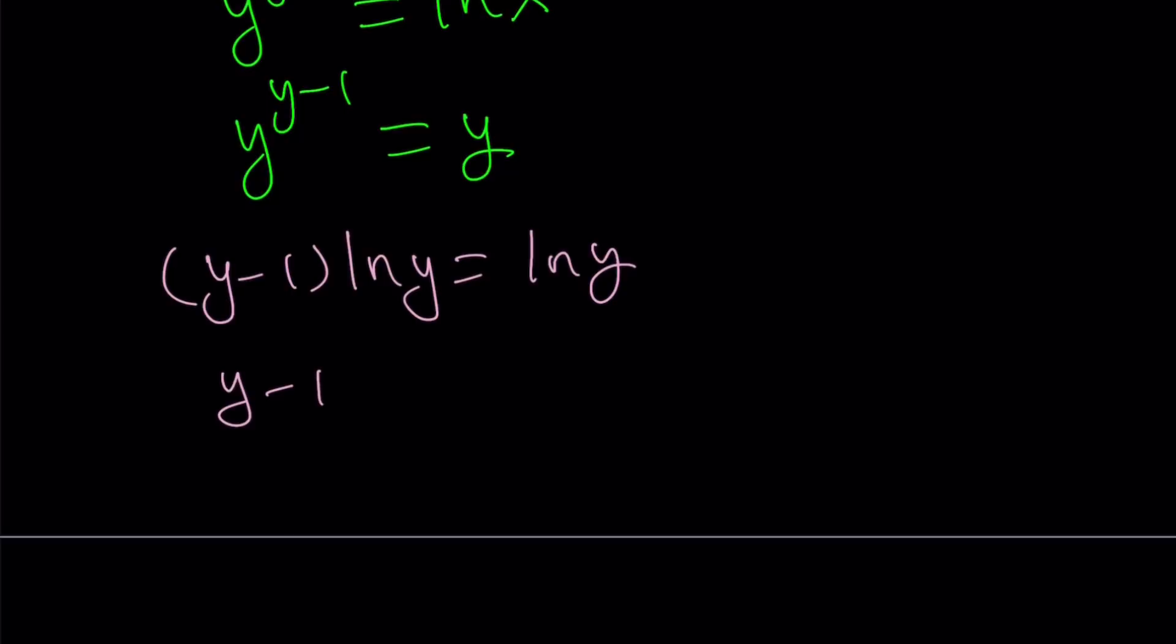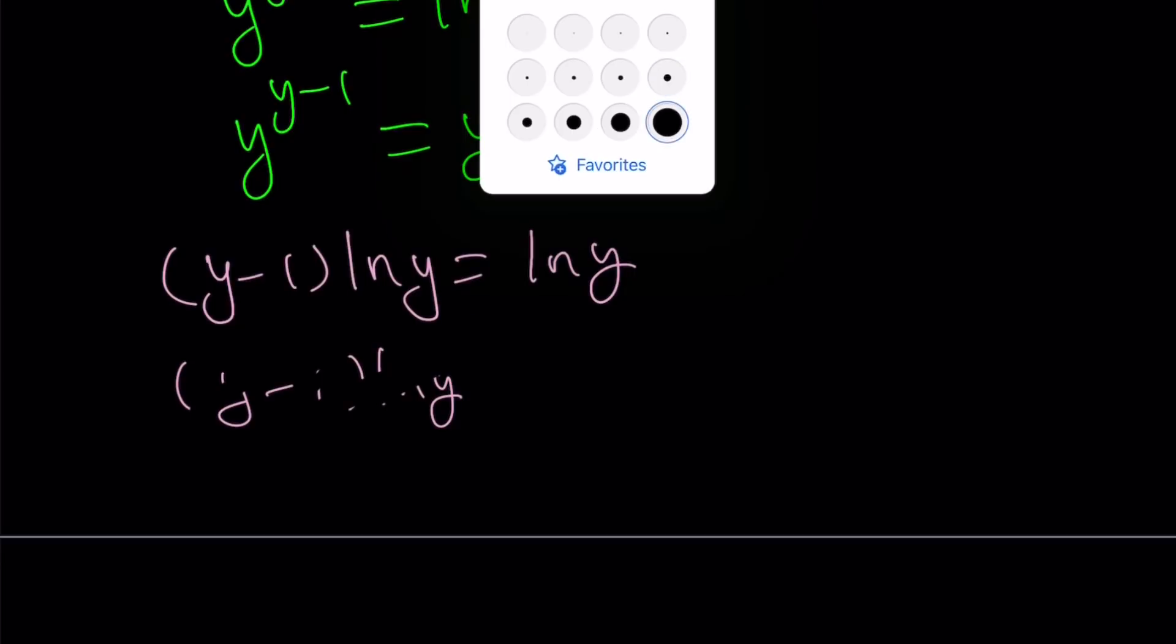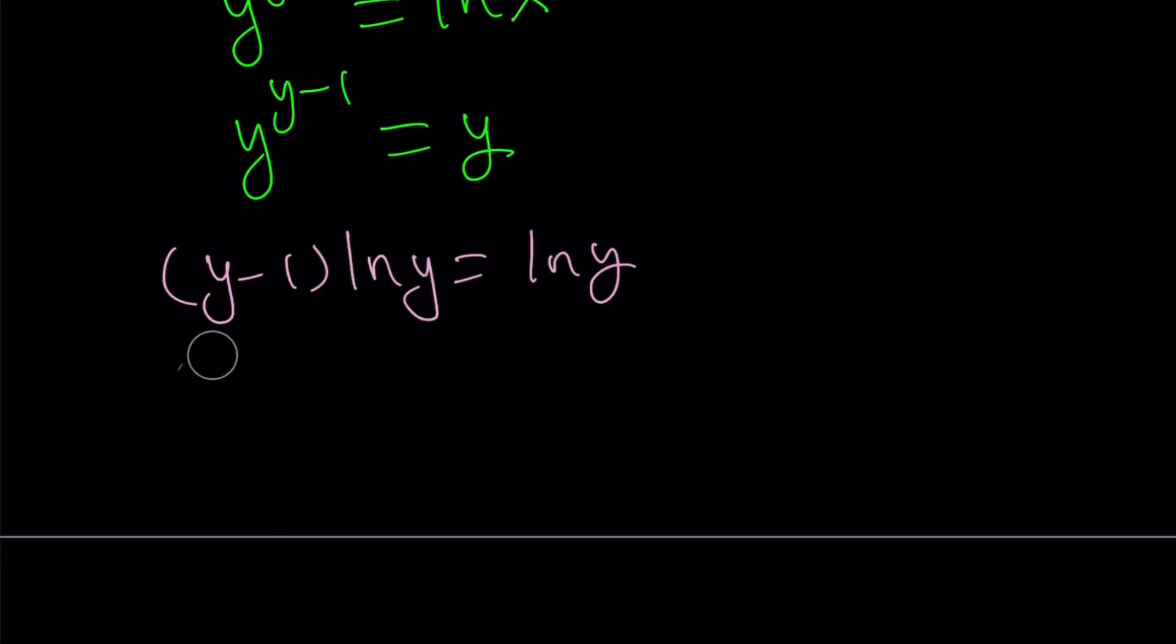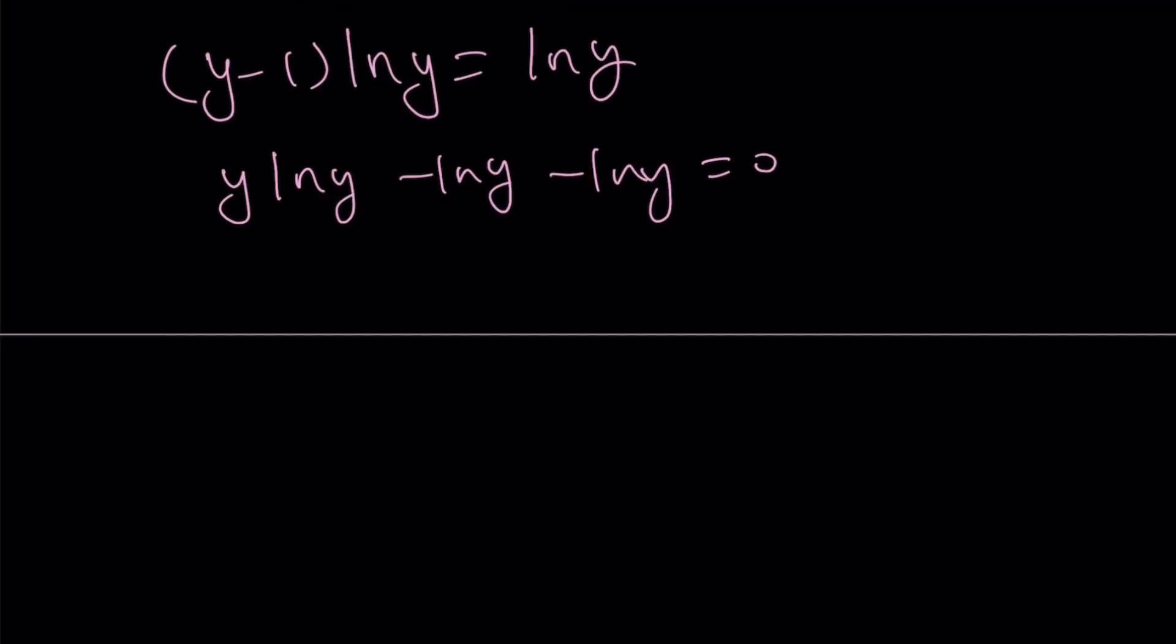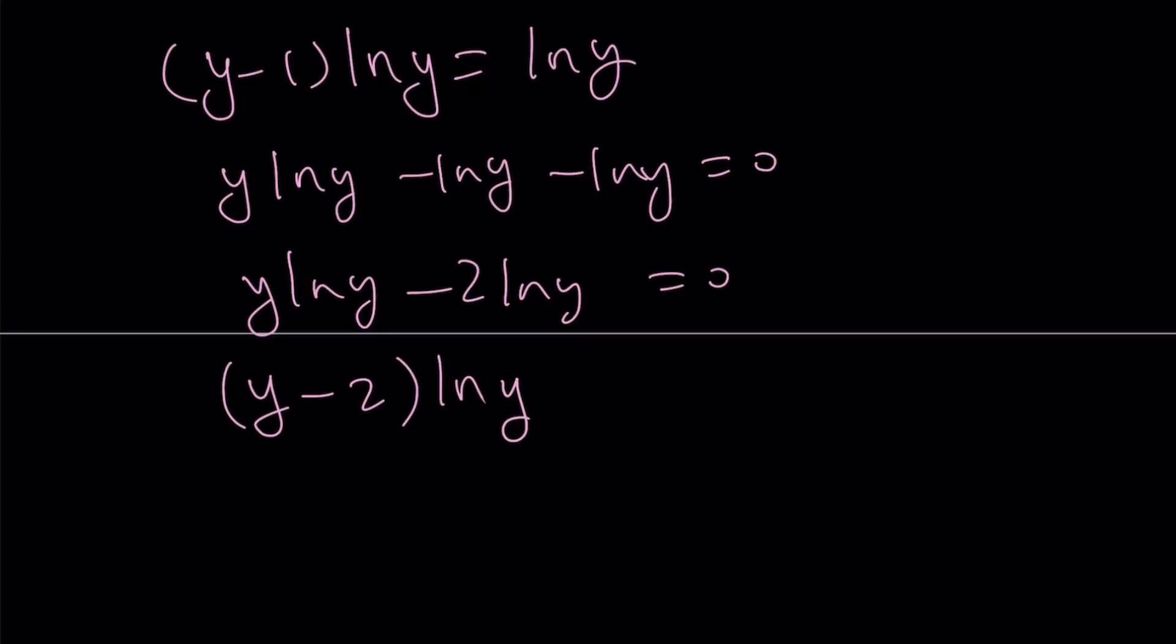And then, I would like to put everything on the same side. So let's go ahead and expand this. So y ln y minus ln y minus ln y is equal to zero. This means y ln y minus two ln y is equal to zero. And I can basically take out y minus two and multiply that by ln y and set the whole thing equal to zero. Great.